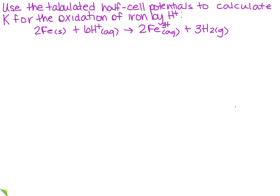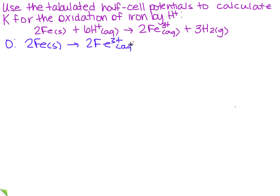We want to use the tabulated half-cell potentials to calculate K for the oxidation of iron by H⁺. They already told us which one is oxidation, so we already have half the battle. The oxidation is the iron, so I've got 2Fe solid going to... the more positive side is the right-hand side, so that's where I'm going to add my electrons. And I've got positive 3 times 2, which is 6, so I need to add 6 electrons.